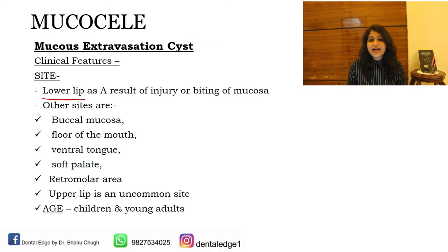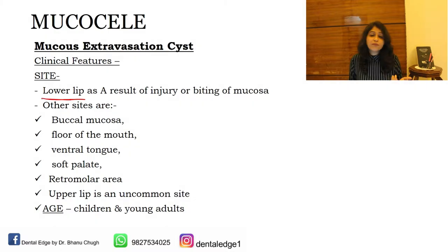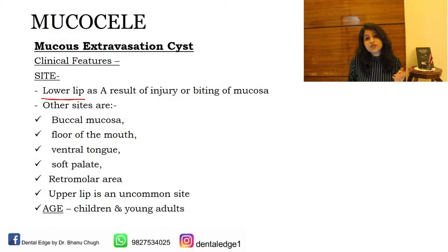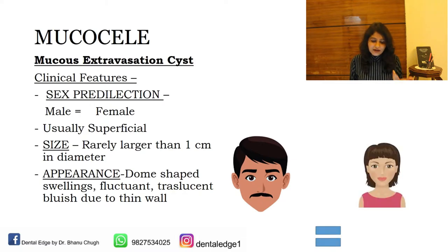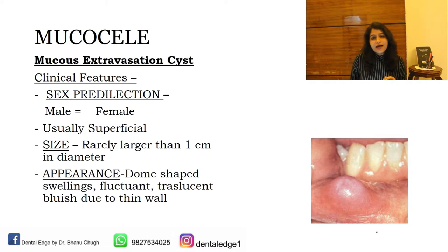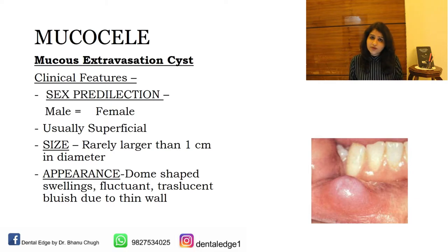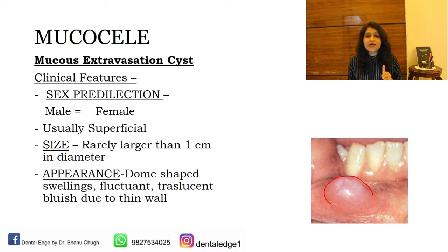Upper lip is a very uncommon site, and if you see a lesion on the upper lip you should suspect a salivary gland tumor rather than a mucocele. Usually the lesion is due to trauma, although the patient will not recall a history of trauma. Since it is due to trauma it is more commonly seen in children and young adults. Sex predilection is equal in males and females. Usually a mucocele is superficial and appears translucent blue in color due to mucin pooling. If it is deep, the color is that of normal mucosa. Size is from a few mm to about one centimeter, rarely exceeding that, with a dome-shaped semi-circular appearance. It is fluctuant, movable, and has a bluish translucent hue.